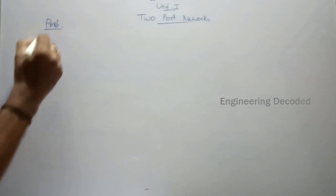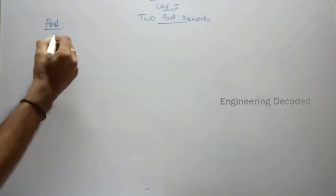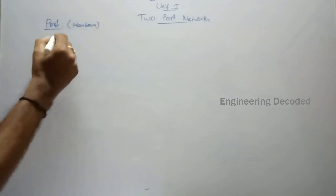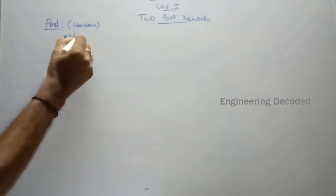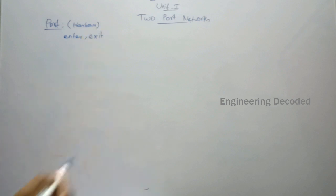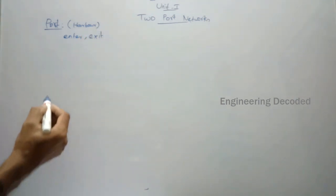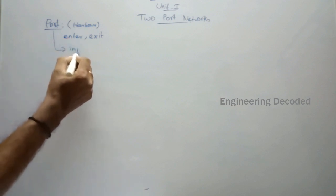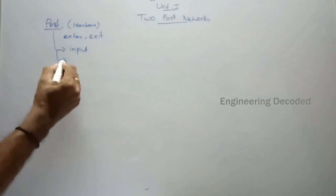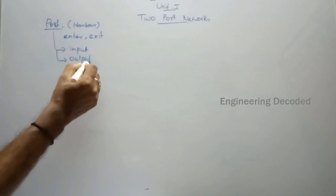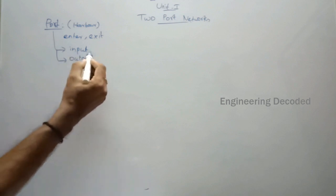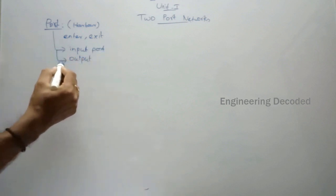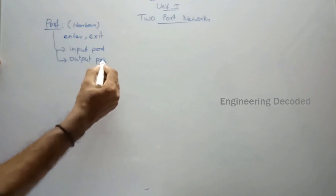When you hear the word port, you can remember that a port is nothing but a harbor. You know ships enter the harbor or they exit the harbor. Similarly, in any circuit we can give an input to the circuit or we can take an output from the circuit. The region through which you are going to give the input to the circuit is named as an input port, and the region through which you are going to collect the output is named as an output port.